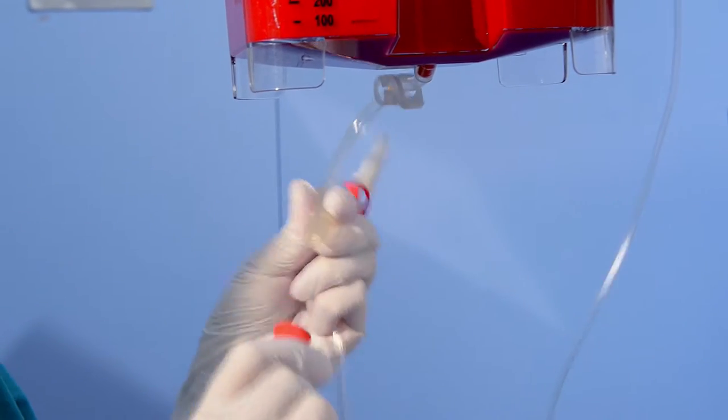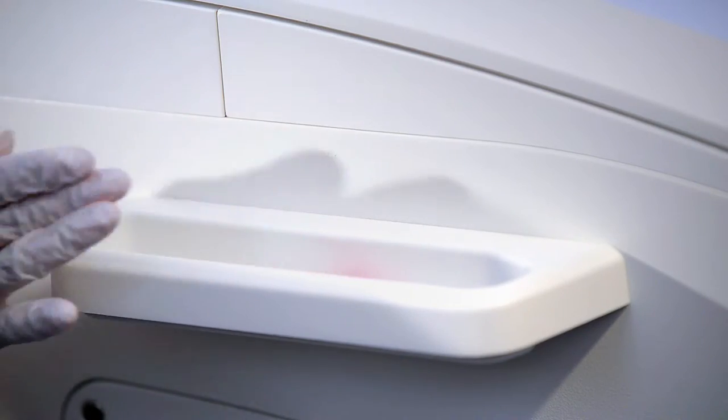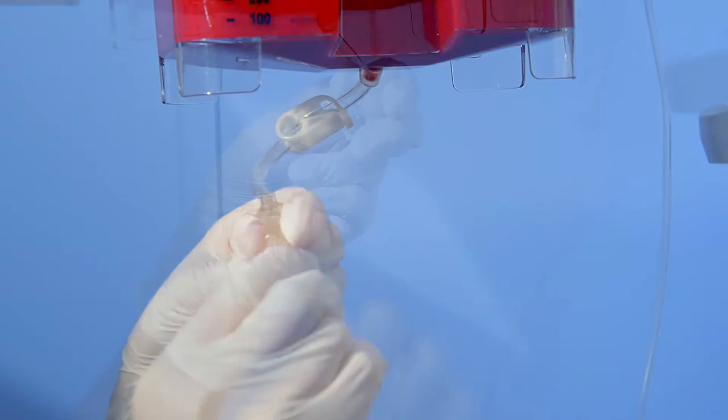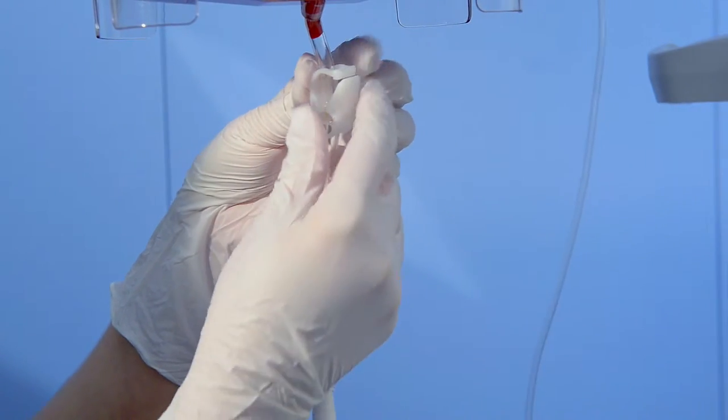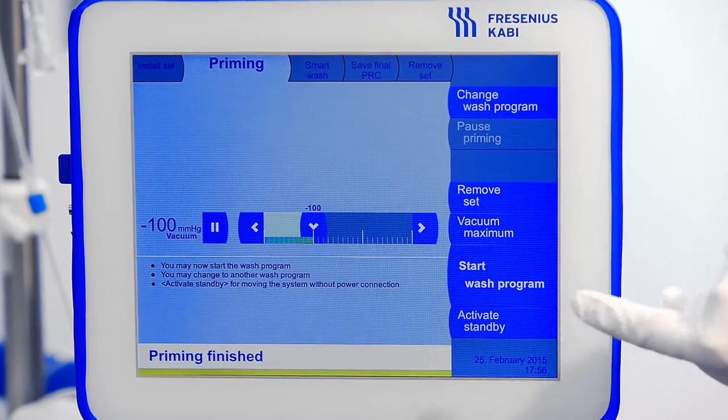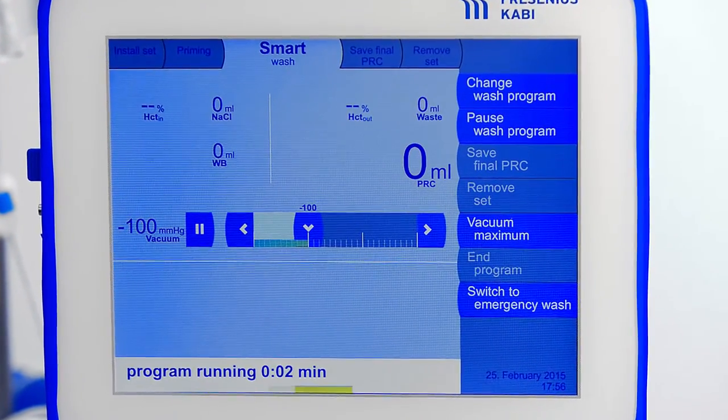Connect the blood line of AT3SET with the stepped adapter of the ATR reservoir and open the clamp. You may now start washing the blood by pressing Start Wash Program key.